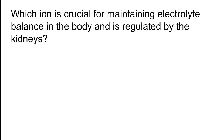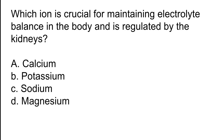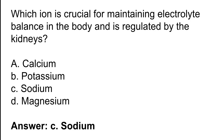Which ion is crucial for maintaining electrolyte balance in the body and is regulated by the kidneys? Options: A) Calcium, B) Potassium, C) Sodium, D) Magnesium. The correct answer is option C. Sodium is the ion crucial for maintaining electrolyte balance in the body and is regulated by the kidneys.